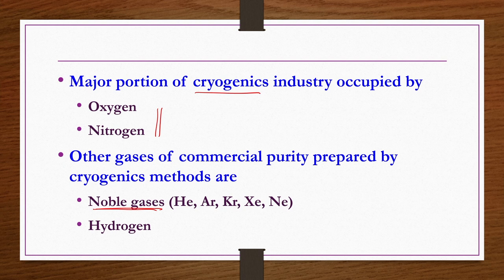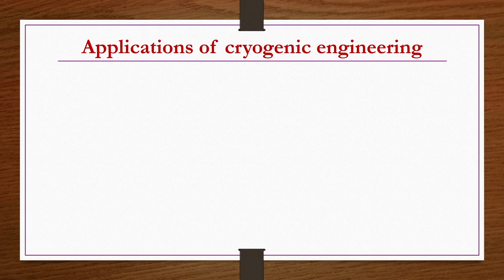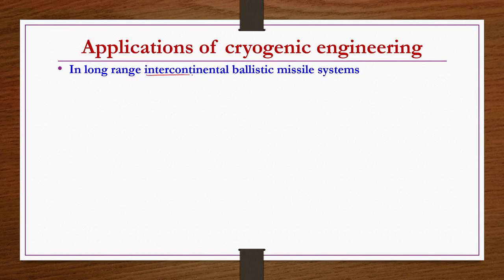In this lecture and the next, we are going to study the production and purification of air to get oxygen and nitrogen separately, and then discuss the production of carbon dioxide and hydrogen. Before going to the production of cryogenic oxygen and nitrogen, we will see a few applications of cryogenic engineering. As already mentioned, it is needed in long range intercontinental ballistic missile systems.